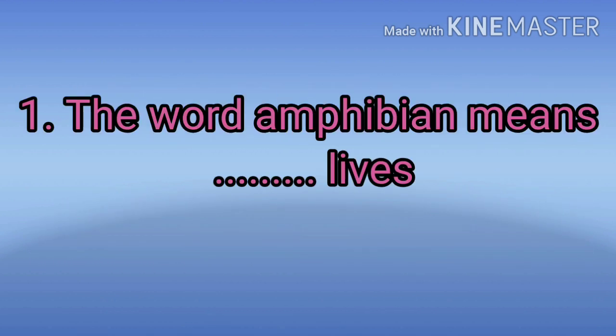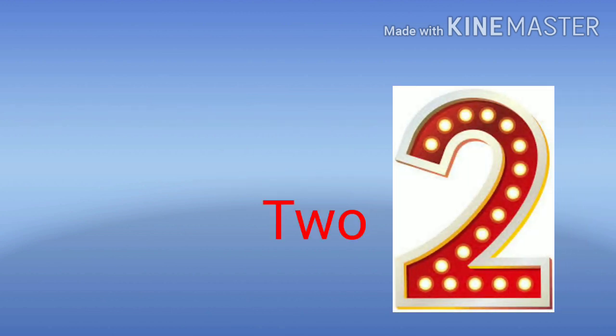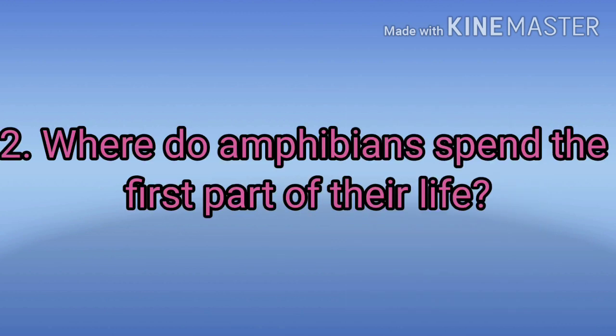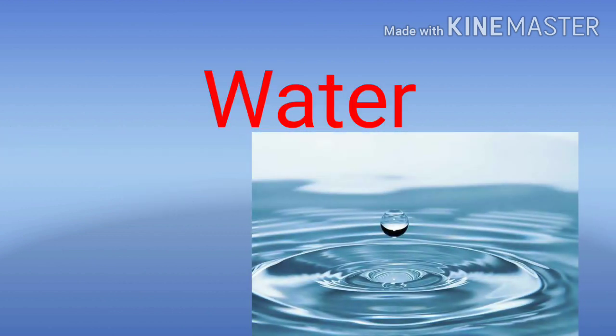Question number 1: The word Amphibian means dash leaves. The answer is 2. Question number 2: Where do Amphibians spend the first part of their life? The answer is water.